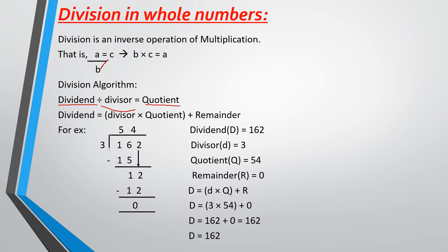To check if the division is done correctly, the formula is: dividend equals divisor multiplied by quotient plus remainder. So: dividend equals 3 multiplied by 54 plus 0, which gives 162. Our dividend is also 162, so the division is done correctly. We have verified it through the division algorithm.